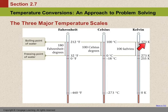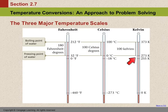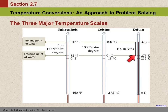The Kelvin scale is what we'll use when we talk about gases. It's based on the idea of absolute zero — there is an absolute lowest temperature you cannot get below, and that is zero Kelvin. The size of the divisions is the same as Celsius degrees, so the freezing point of water is 273 Kelvin and the boiling point is 373 Kelvin. The difference is 100, just like on the Celsius scale.